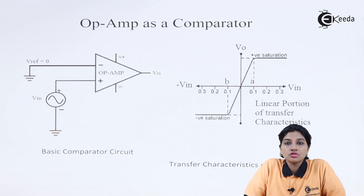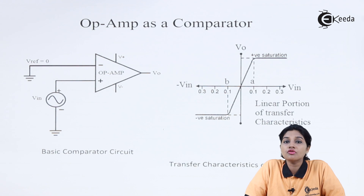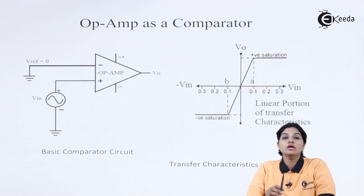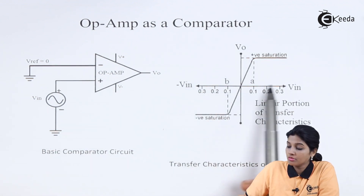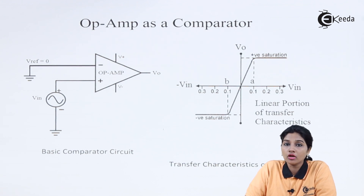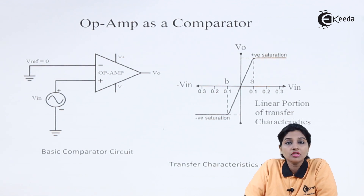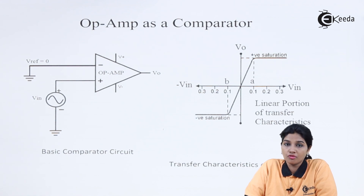Let's see the transfer characteristics of Op Amp as a comparator. The transfer characteristic is the graph between output voltage and input voltage. Output voltage is on the y-axis and input voltage is on the x-axis. Since the Op Amp is connected in open loop configuration, the open loop gain of the Op Amp is very high — essentially infinity — and even a small change in the input signal can cause a very large change in the output voltage.